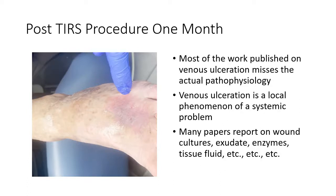Most of the work published on venous ulcerations misses the actual pathophysiology. Venous ulceration is a local phenomenon of a systemic problem. Many papers report on wound exudates, cultures, enzymes, tissue fluid, and different ways to treat hypertension, such as perforator ablation, deep venous investigation, stripping of the saphenous vein, dermal ablation of the saphenous vein, etc.